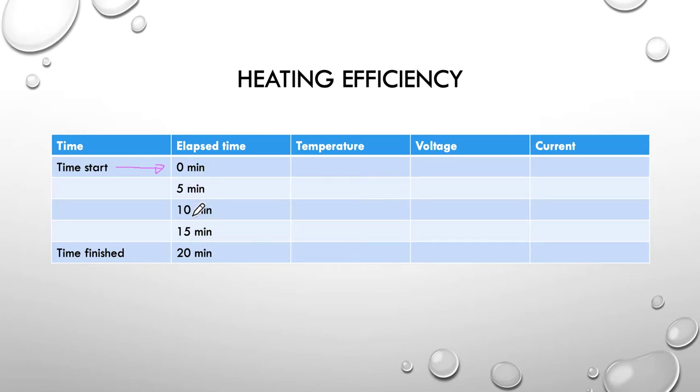So, one, two, three, four, five readings. We're going to measure the temperature, the voltage, and the current. Then we're going to use that information to look at how efficient our little heating system is.